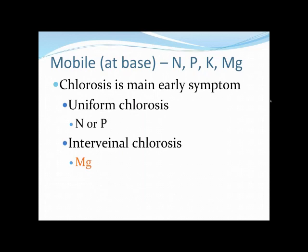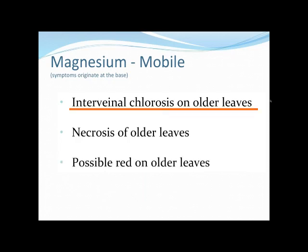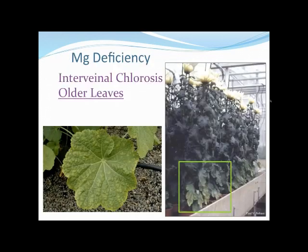If the deficiency symptoms on the lower part of the plant are interveinal chlorosis, we've made it really easy — it's magnesium. It's the only element with that type of interveinal chlorosis at the bottom of the plant. The symptoms appear on the older leaves; eventually we'll get some necrosis and possibly some red coloration. But we're really interested in that interveinal chlorosis on the older leaves.